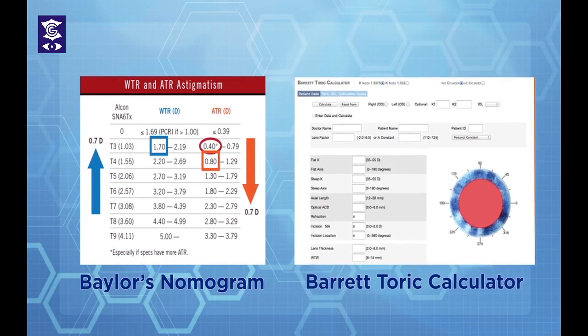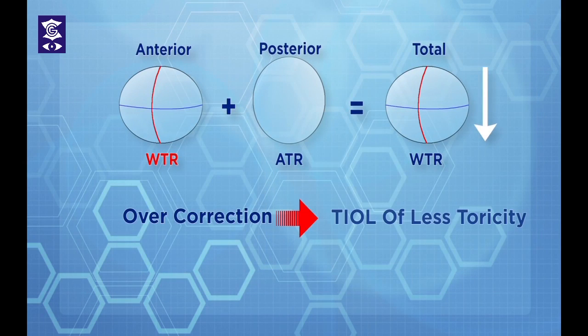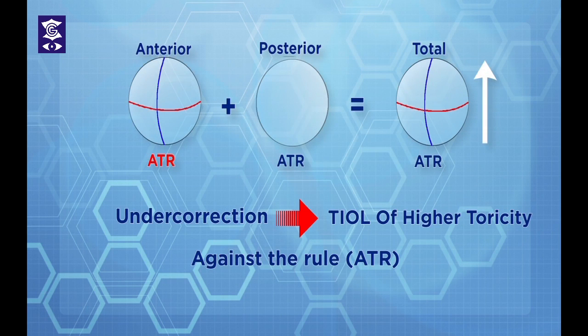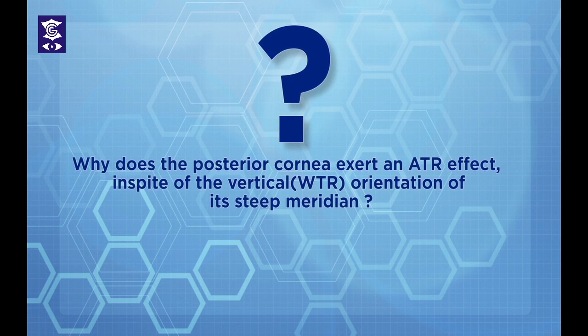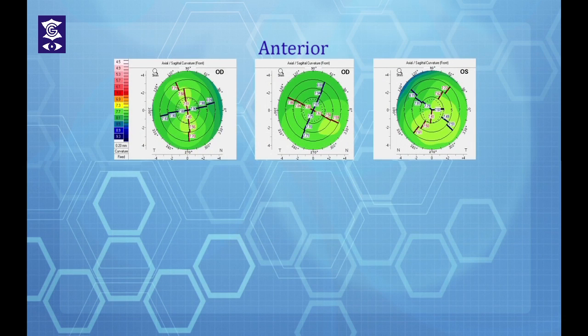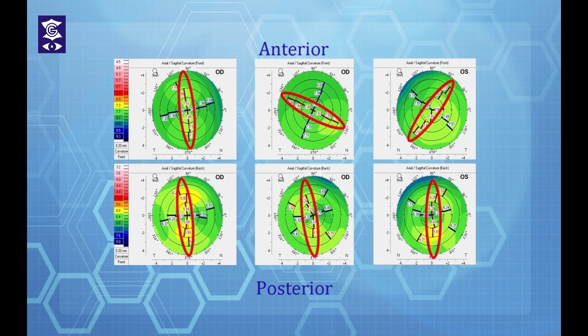Hence, the Bales nomogram and Barrett toric calculator recommend using a toric IOL of less toricity in with-the-rule and higher toricity in against-the-rule eyes for optimal outcomes. The first question we address is: why does the posterior cornea exert an against-the-rule effect on the anterior cornea, in spite of the vertical orientation of its steep meridian?